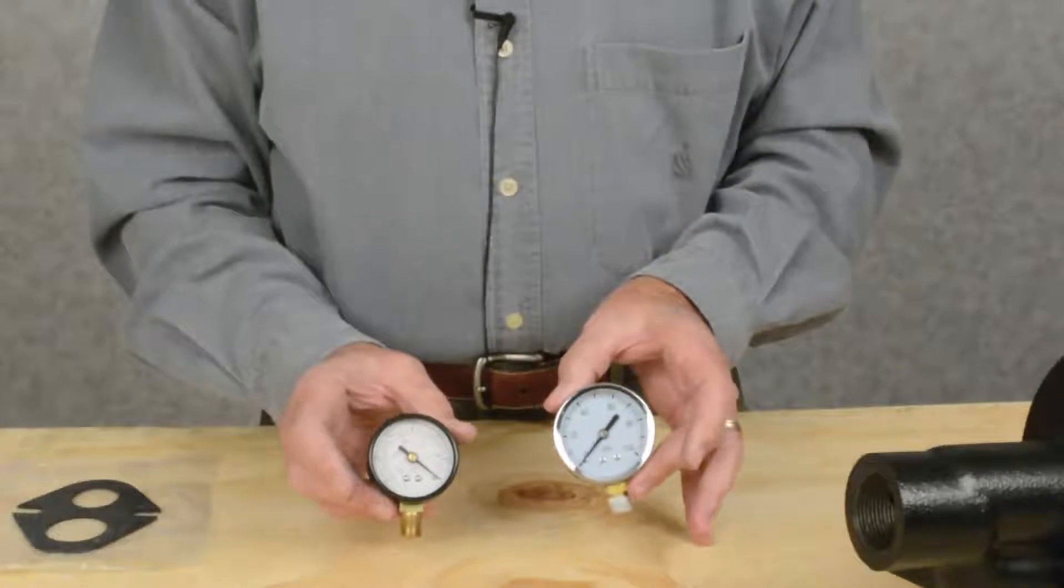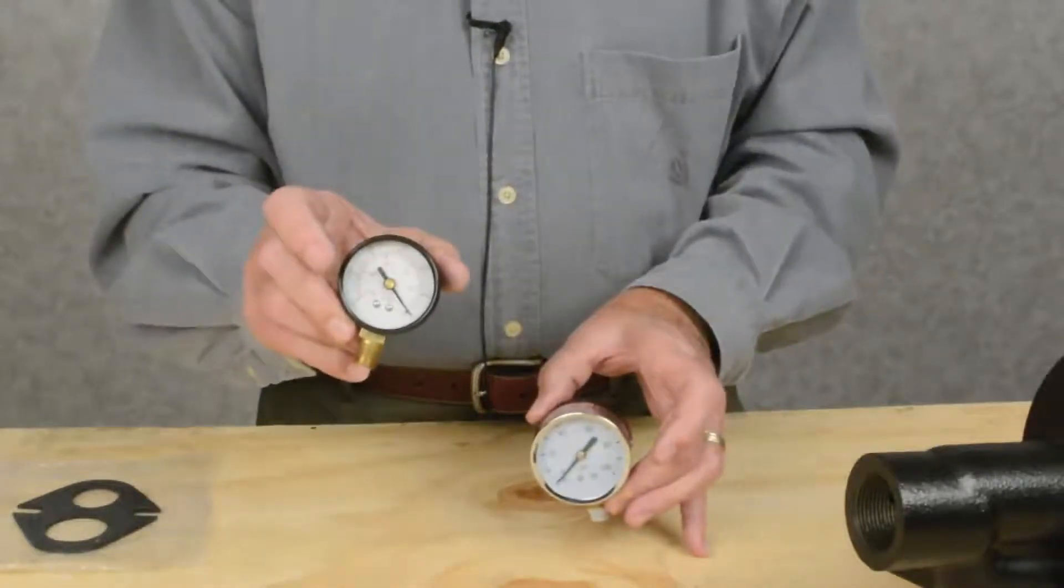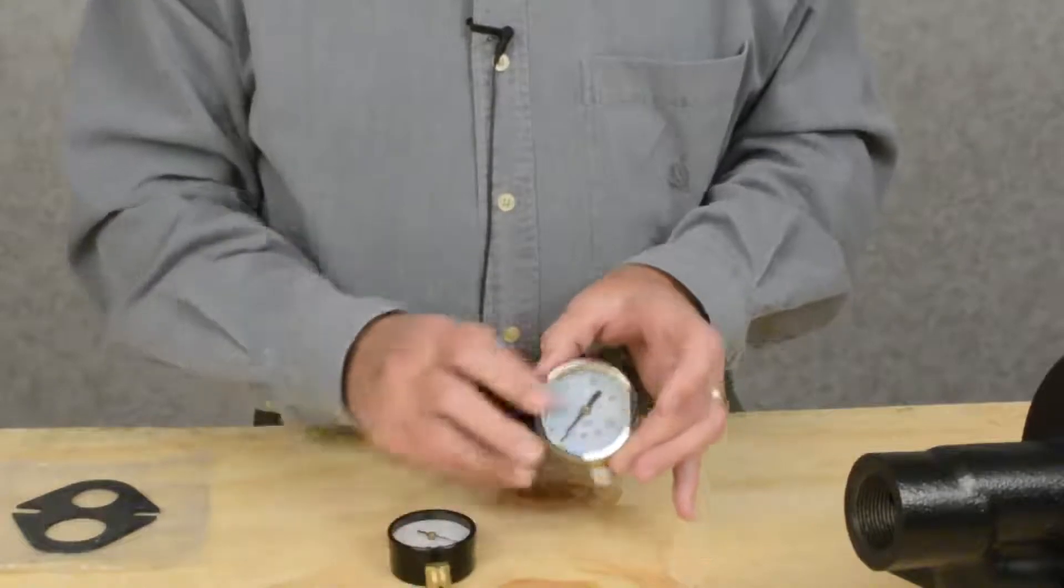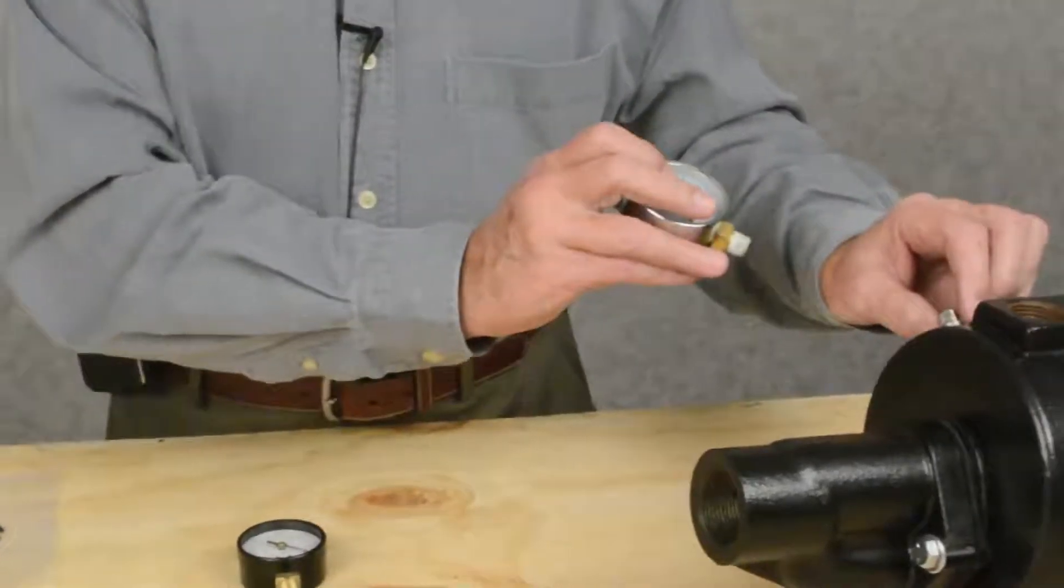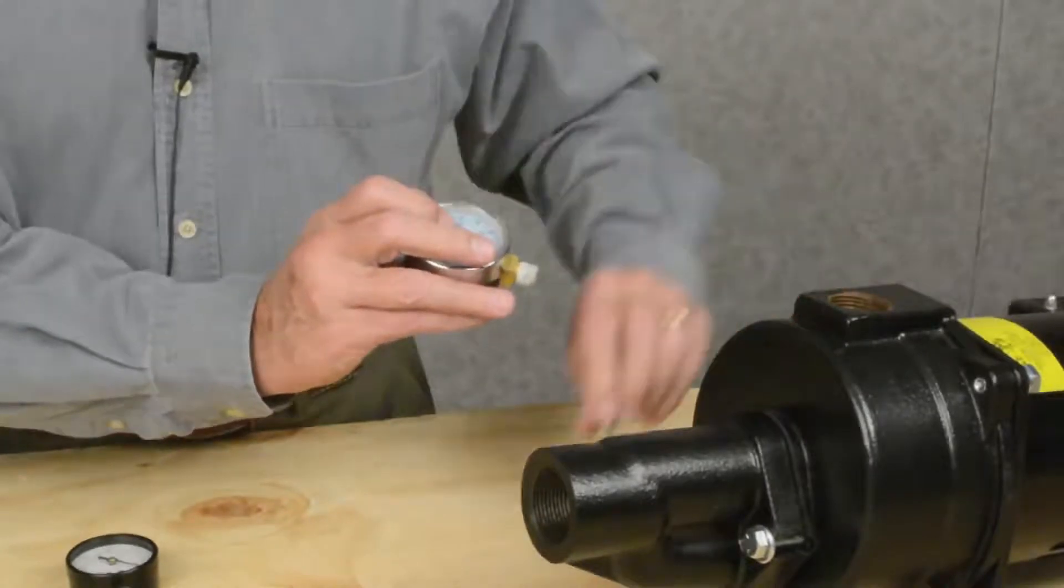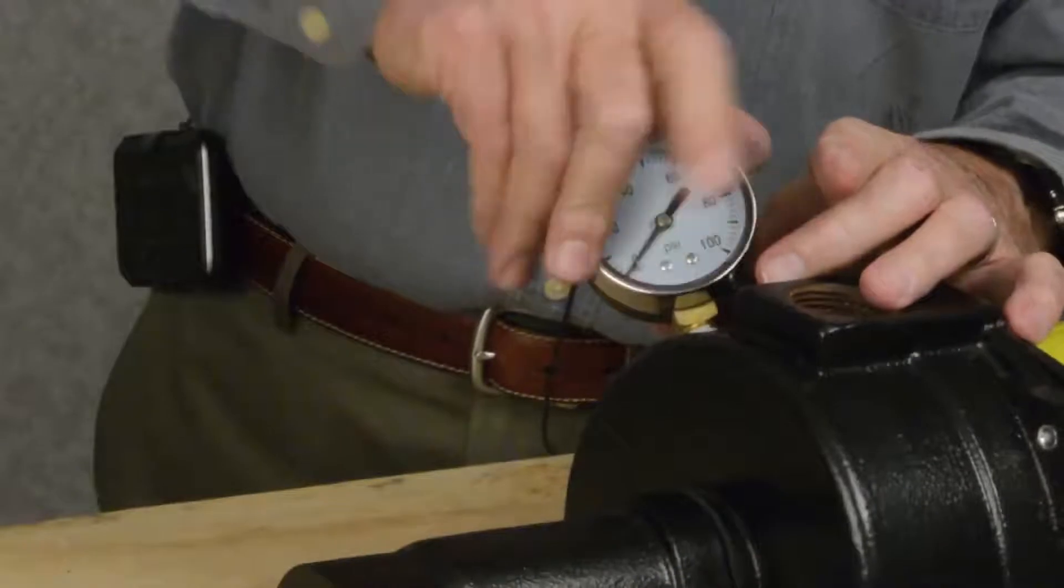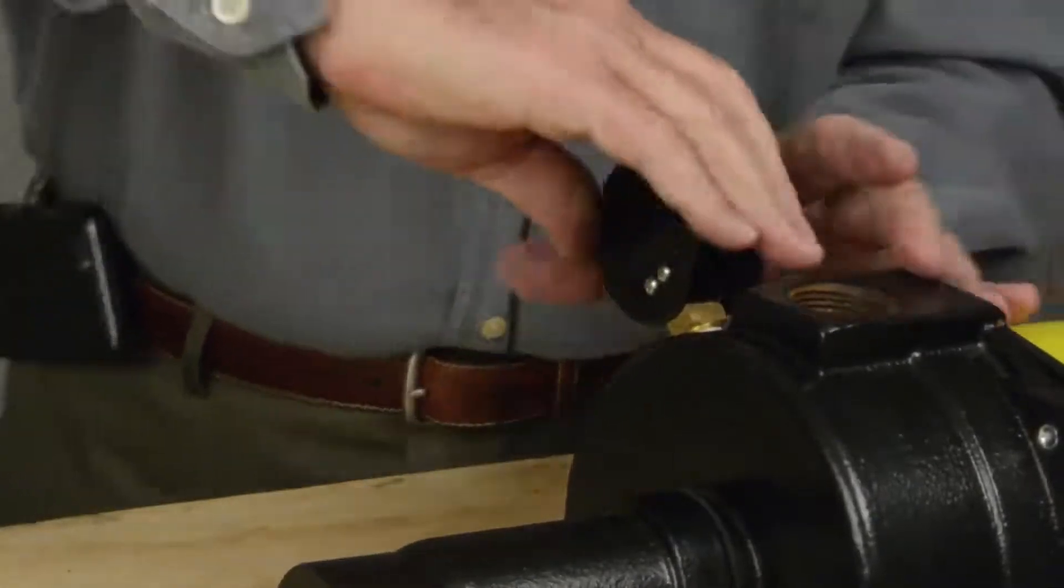Pump comes with two gauges. This is a pressure gauge. This is a vacuum gauge. The pressure gauge goes in the case. You take your quarter inch plug out, insert your gauge, snug it up.